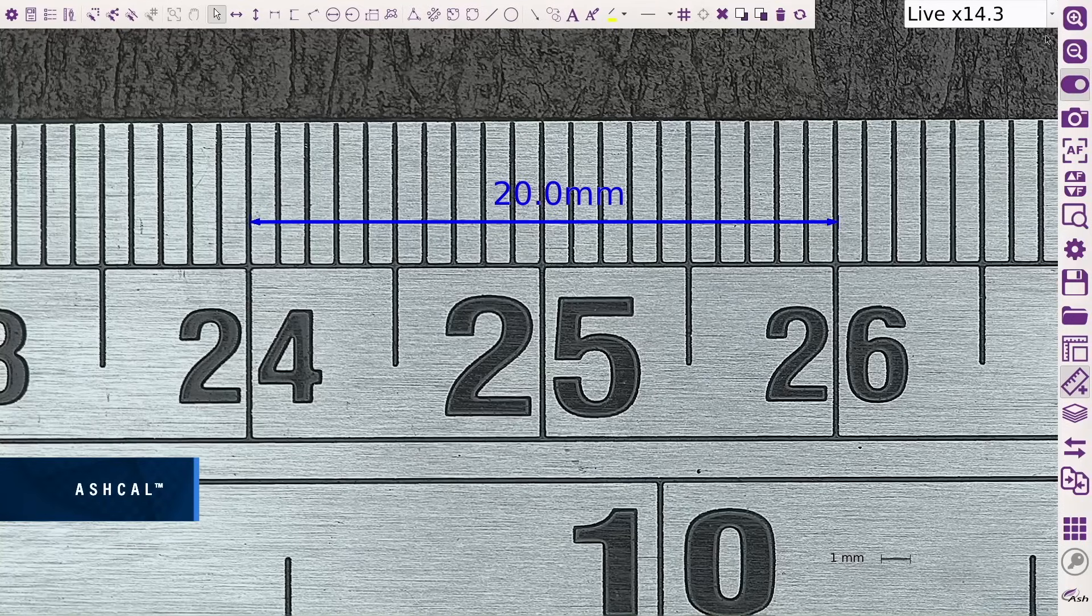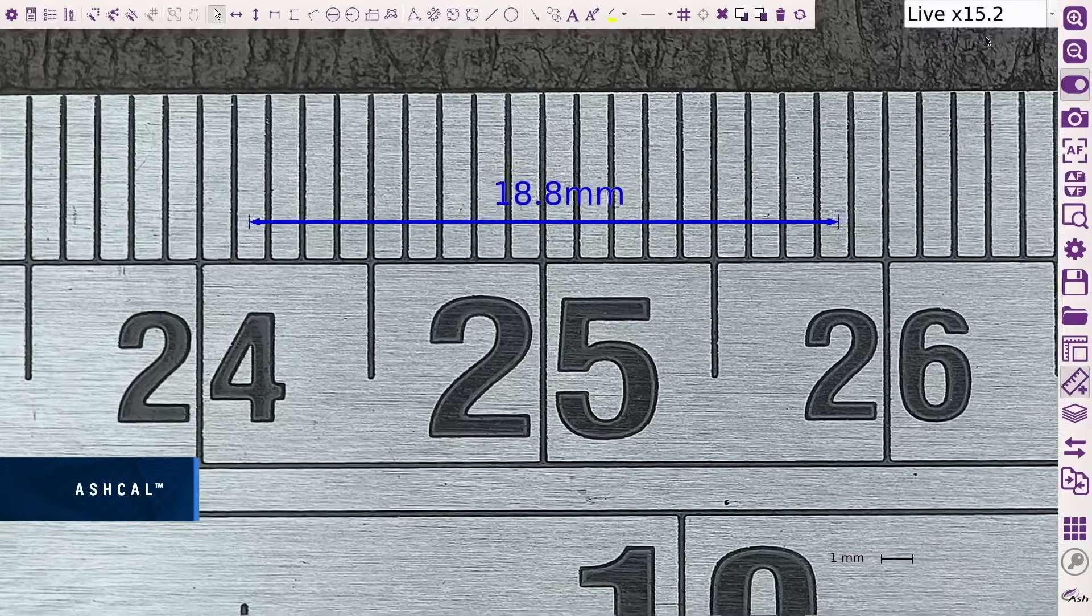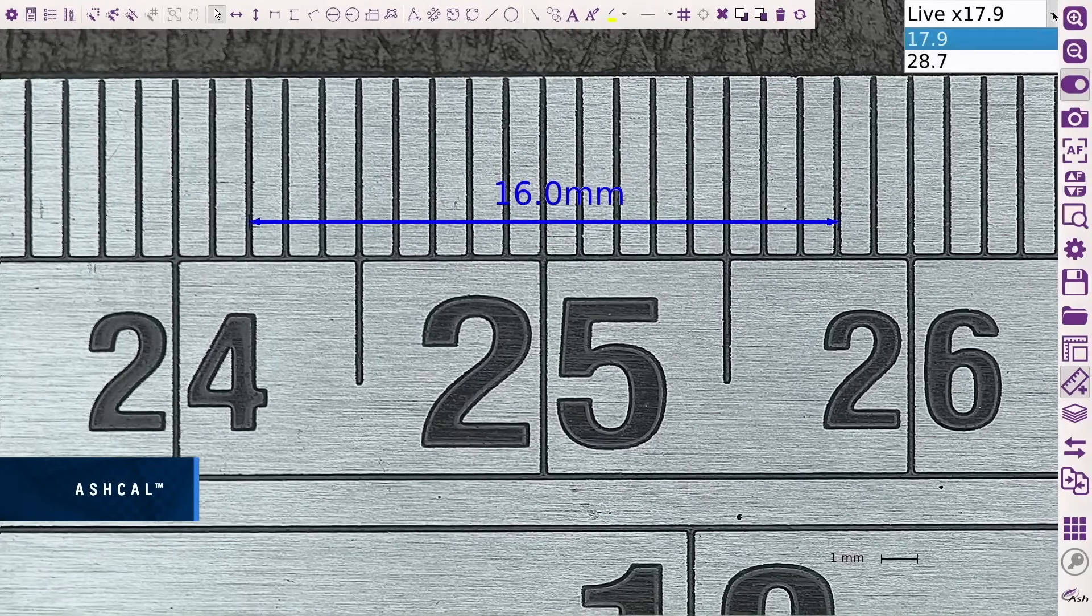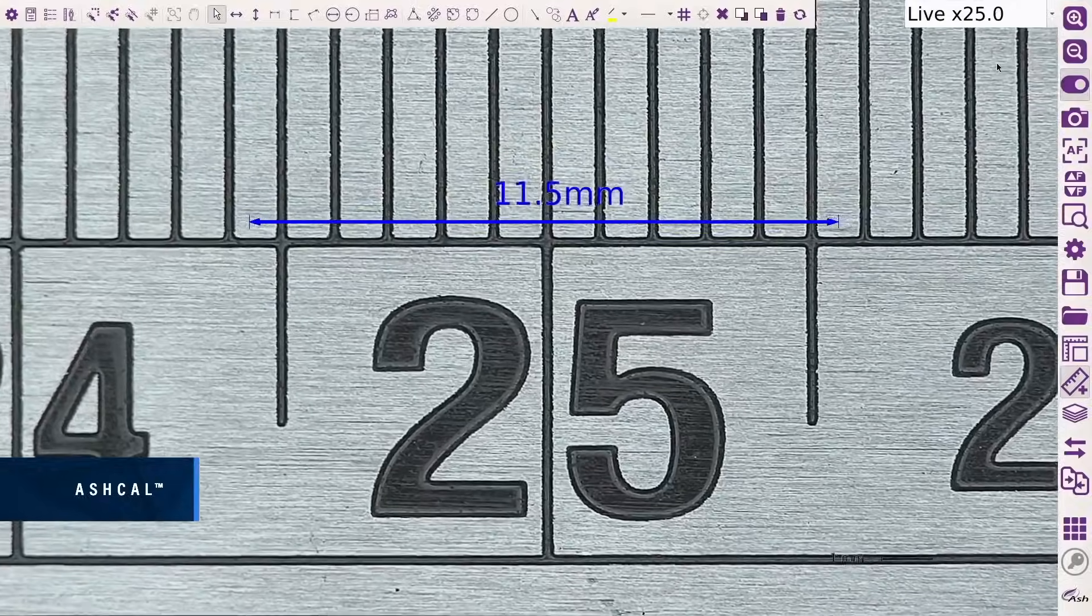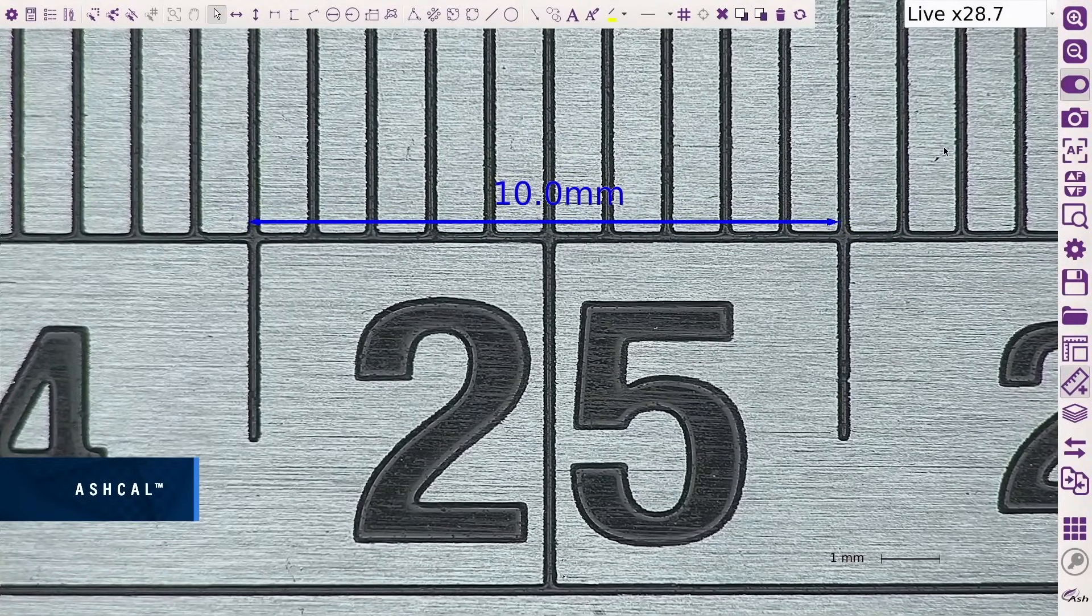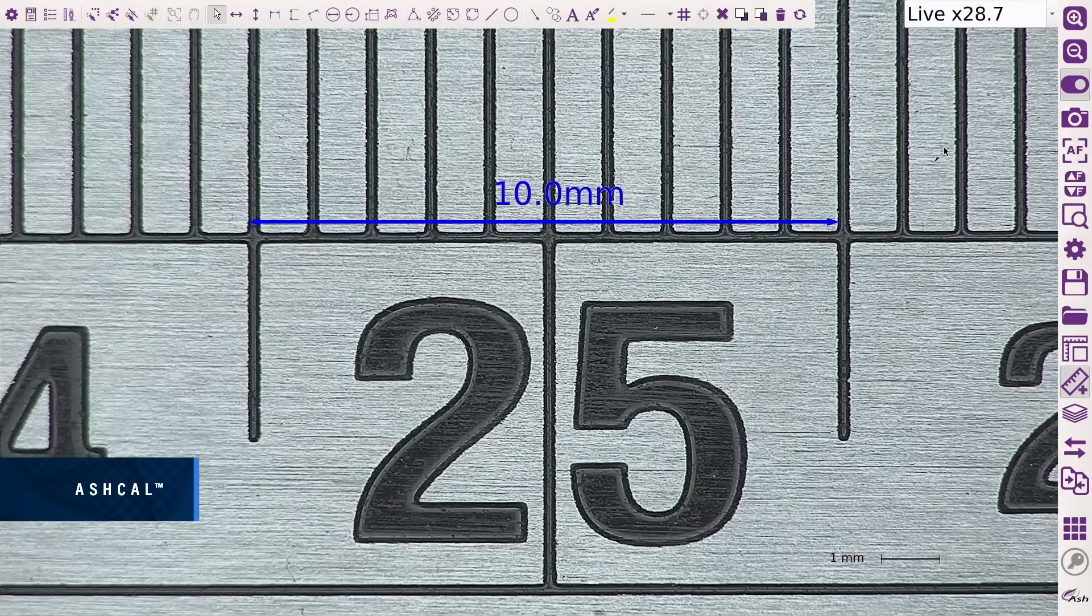Enhanced AshCal calibration technology continually maintains calibration at all magnification levels, removing the need for manual setup and recalibration, saving time and increasing efficiency. AshCal calibration technology is unique to Ash systems.